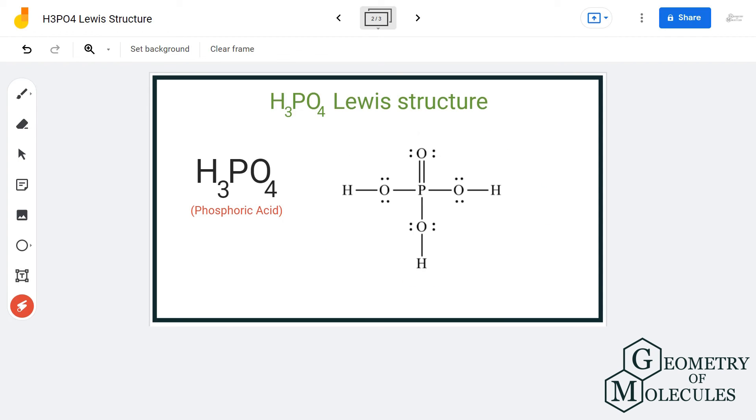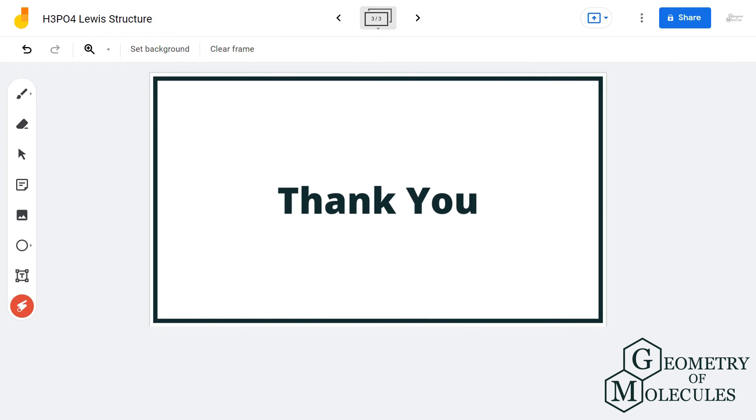In this structure, the phosphorus atom forms a double bond with one oxygen and single bonds with the rest of the OH groups. I hope this video helps you understand the Lewis structure for H3PO4 molecule. For more such videos on Lewis structure, molecular geometry, and polarity of molecules, make sure to subscribe to our channel. Thanks for watching.